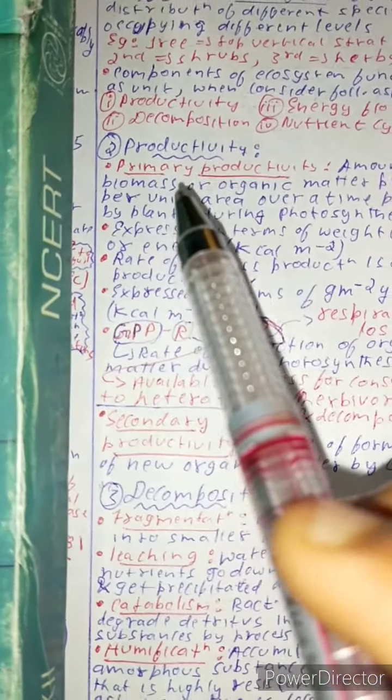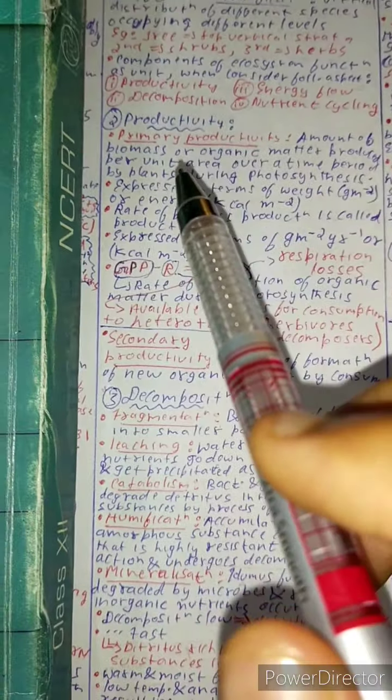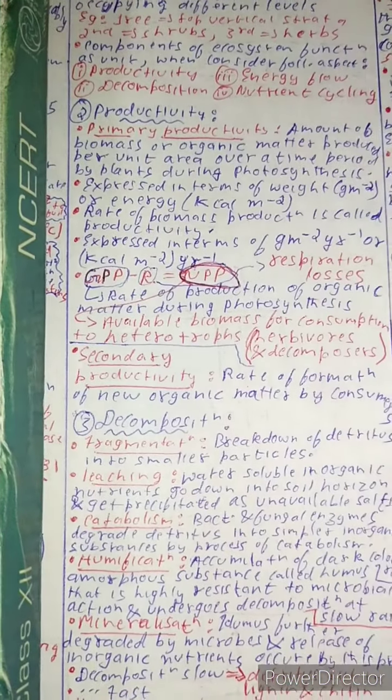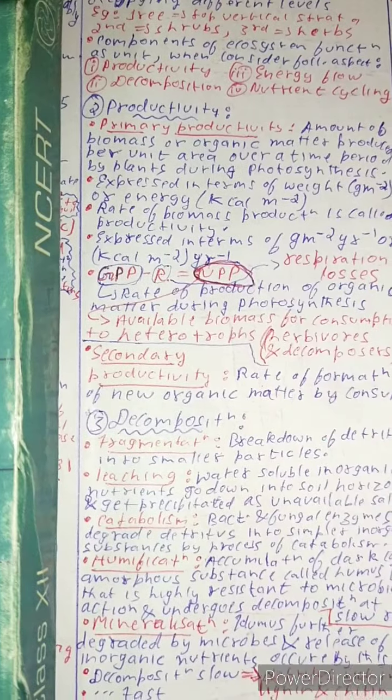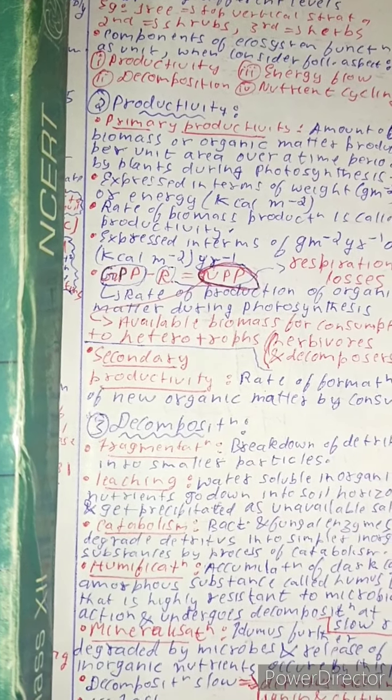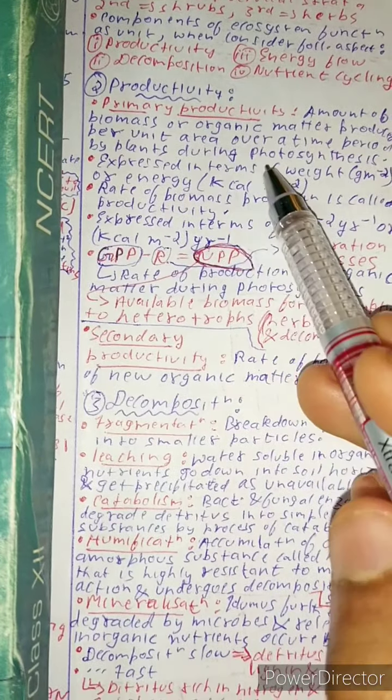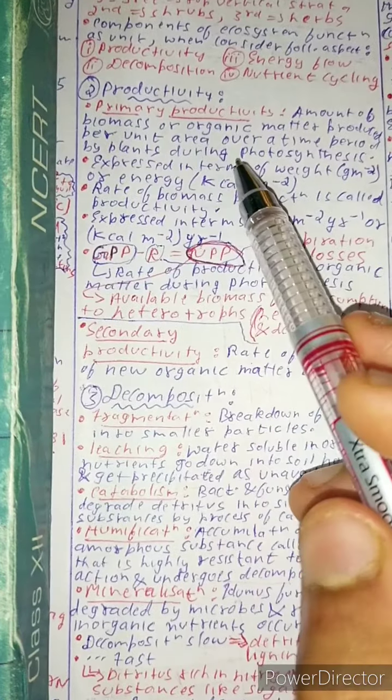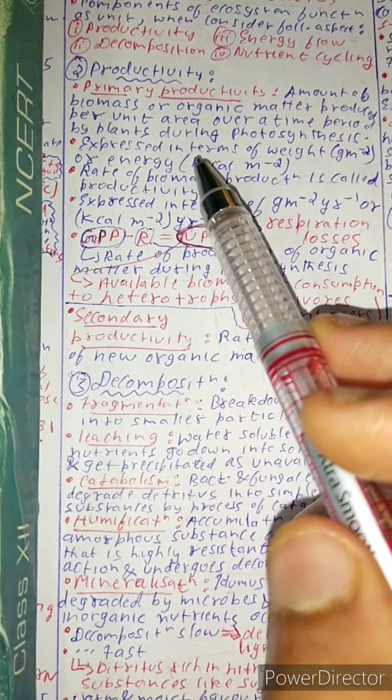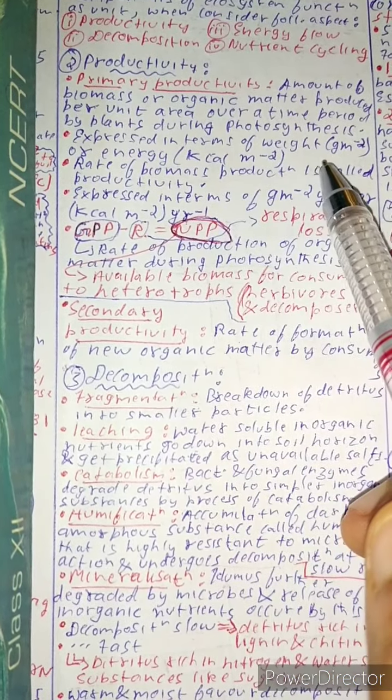The second topic is productivity. Now what is primary productivity? Primary productivity is the amount of biomass or organic material produced per unit area over time period by plants during photosynthesis.